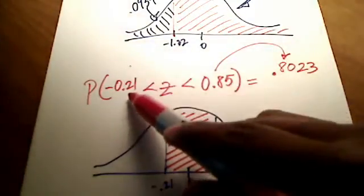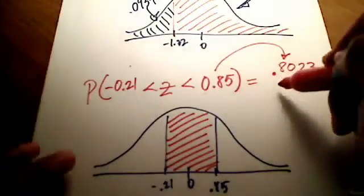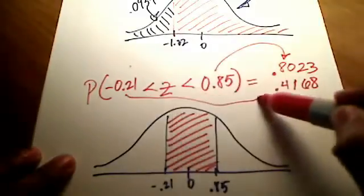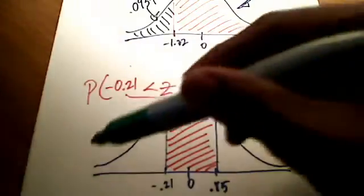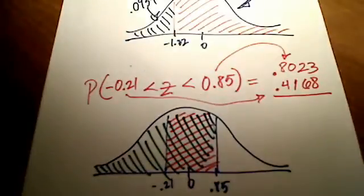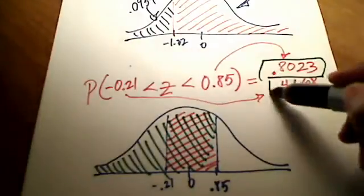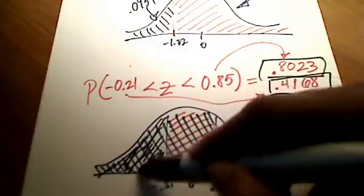I'm also going to look up negative 0.21. That's 4168. So what I actually looked up are these areas. This 0.8023 actually represents all of this area right here that I'll shade in green for you. That's what the 0.8023 represents. And then I looked up this negative 0.21, that gave me an area of 4168. That's actually this area. I'll shade over here in black.